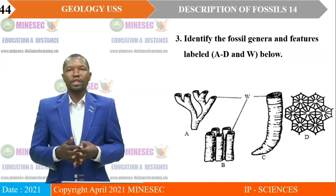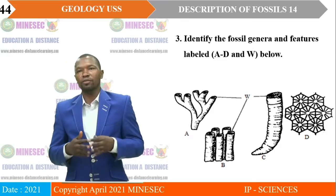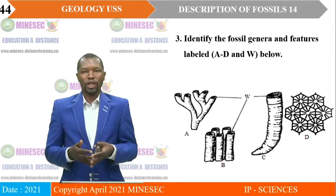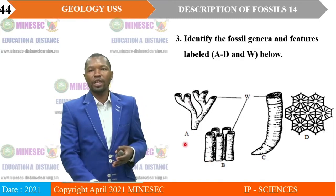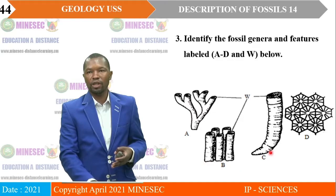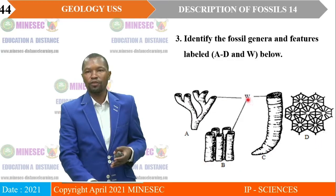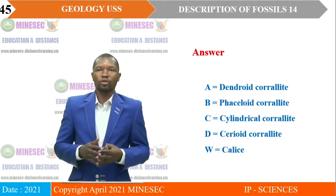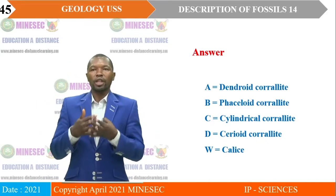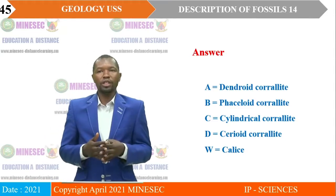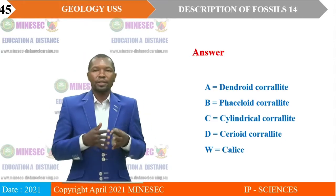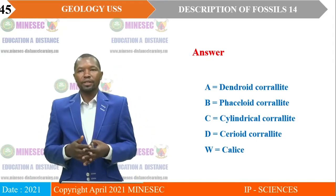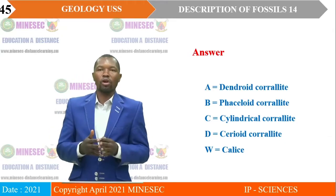Exercise number three: Identify the fossil genera and features labeled A to D and W in the structures provided. You have A, B, C and D. A is dendroid corallite. B is fascicloid corallite. C is cylindrical corallite. D is cerioid corallite. And W is for the cardinal.